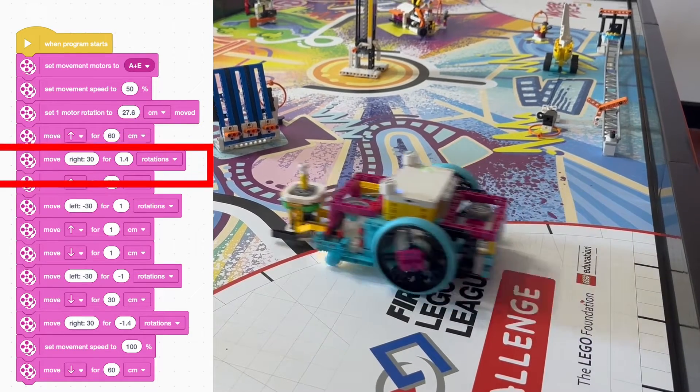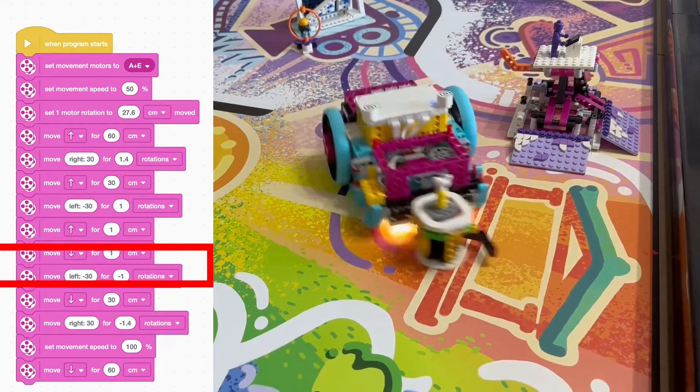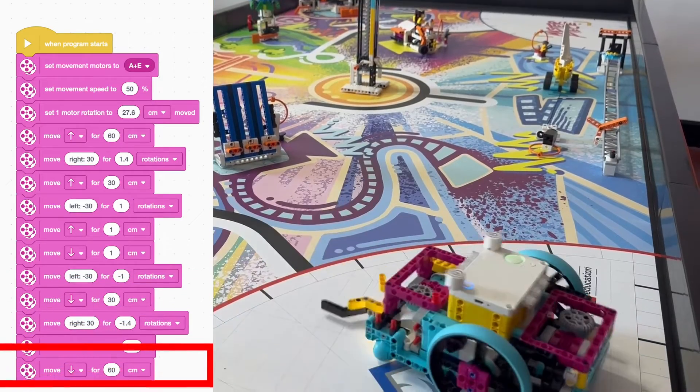We then used a series of straight and turning blocks to get us to the museum. On our return turf, we used the same code that we used to get there, but made the rotations negative instead of positive, making our robot play the exact same path backwards instead of forwards.